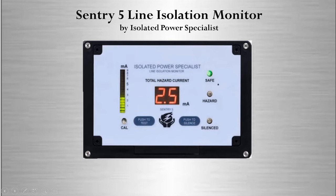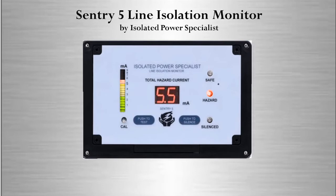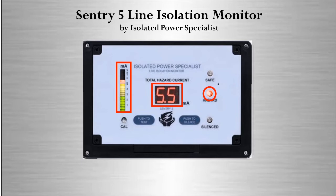This is the state-of-the-art line isolation monitor distributed by Isolated Power Specialists. As the NFPA code stated, there is a green light when in the safe mode, and a red light when in alarm, accompanied by an audible alarm. On the Century 5, you will notice a digital readout in the middle of the monitor showing the amperage of 5.5 milliamps. A colorized bar graph shows the increase or decrease in association with the digital readout. Additionally, it has two buttons: the push-to-silence button to turn off the audible alarm — but it will not turn off the red alarm light — and a push-to-test button to initiate a self-test.